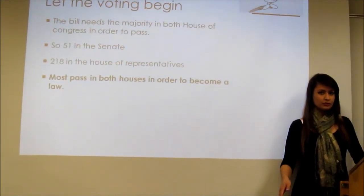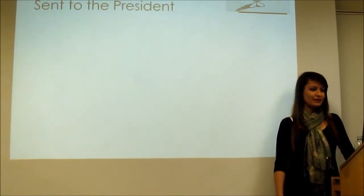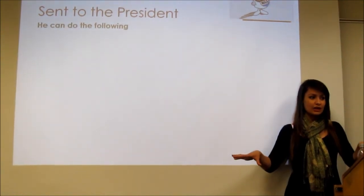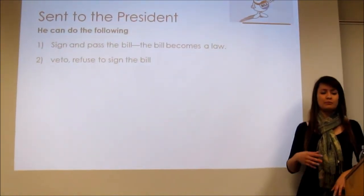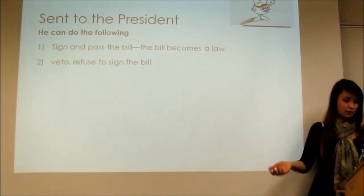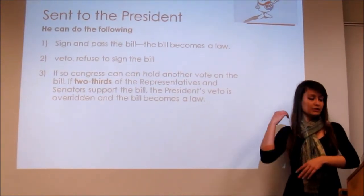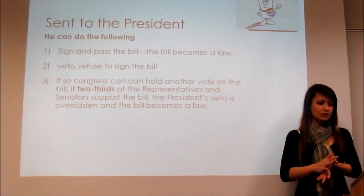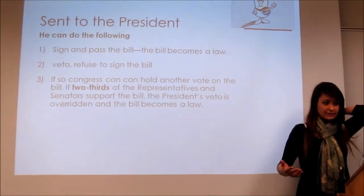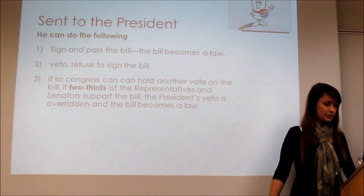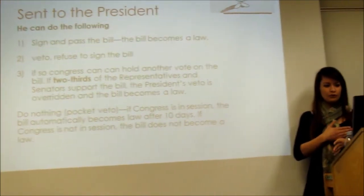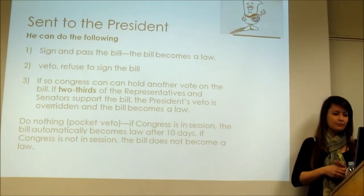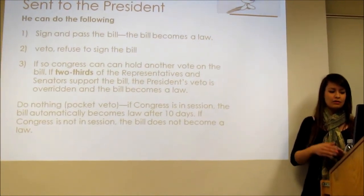The bill must pass in both houses of Congress. Once it does, it's sent to the president, who can either sign the bill — making it a law — or veto it, meaning he refuses to sign and it does not become a law. If the president vetoes the bill, Congress can override the veto with a two-thirds vote in both the House and the Senate, and the bill becomes a law anyway. There's also something called the pocket veto: if a congressional session ends within about 10 days and the president simply doesn't sign the bill, it's effectively vetoed.